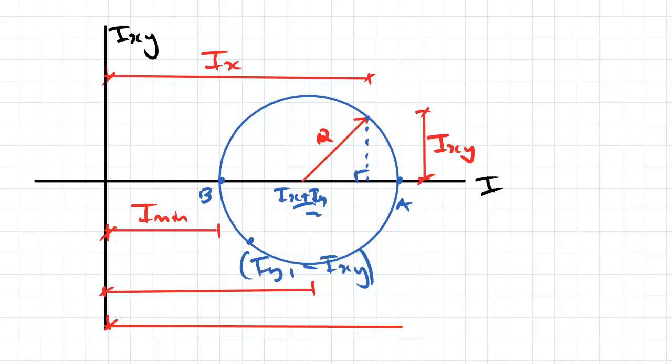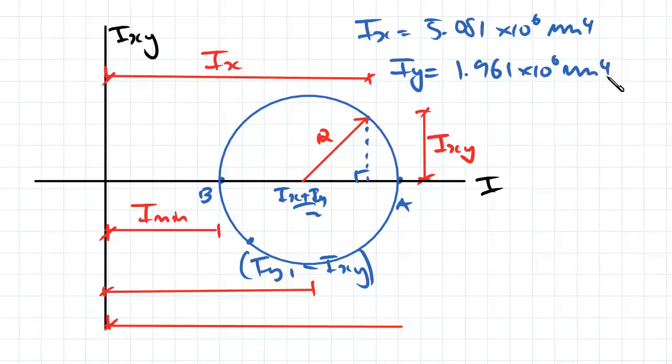Hey guys, I'm just picking up where we left off from the last video. So what we've found so far is we found that Ix is equal to 5.081 times 10 to the 6 millimeters to the power 4. We found that Iy was equal to 1.961 times 10 to the 6 millimeters to the power 4.